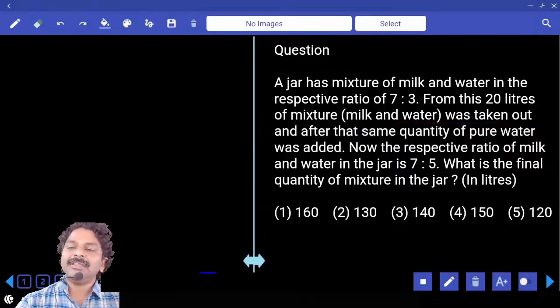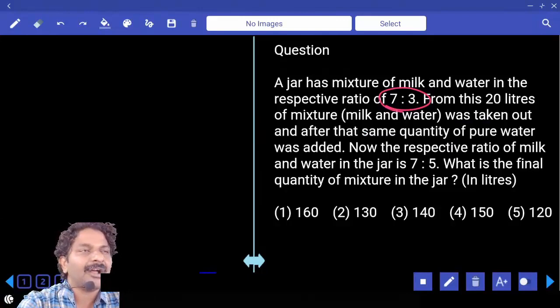Now in the initial container, they are in the ratio of how many parts? So it has to be a 10 multiple. All are 10 multiples.